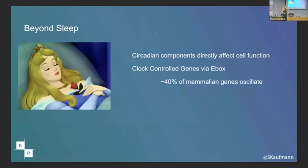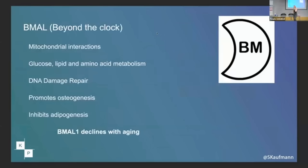So — sleeping beauty. This is to remind us that circadian proteins work in two different ways: either they work directly, or they do something important indirectly by activating the E-box. Example one is BMAL1. We said it was the main orchestrator for sleep, but that's just one of the things it does. It controls your mitochondria, controls all of your metabolism — your glucose, lipids, amino acids. BMAL1 controls this.